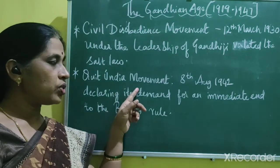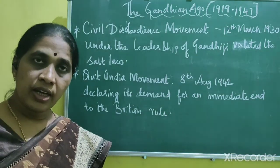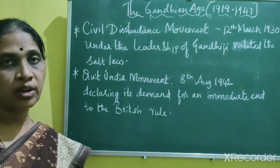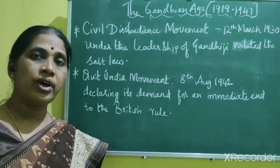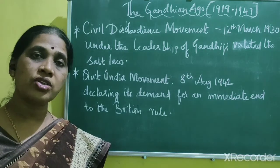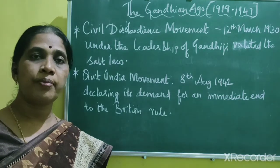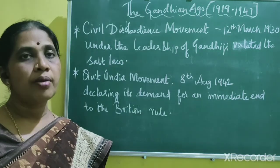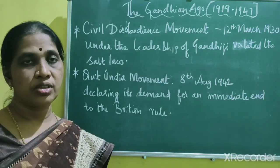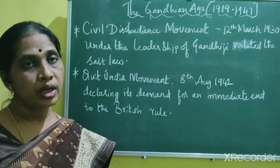The Quit India Movement was launched on 8th August 1942. Between 1939 and 1945, the world witnessed the Second World War. In 1942, the British government tried to seek the cooperation of Indians in the war. In March 1942, the government sent a commission headed by Stafford Cripps, who approached the nationalists to seek their support. But the Cripps Mission failed to get their support, and in August 1942, Gandhiji launched the Quit India Movement.